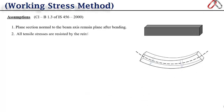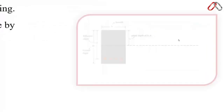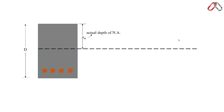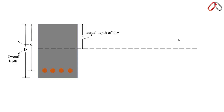The second assumption is that all tensile stresses are resisted by the reinforcement and none by the concrete, except in the uncracked phase where concrete alone resists both compressive and tensile stresses. Here xa is the distance of the neutral axis from the upper fiber, capital D is the overall depth, small d is the effective depth — the distance from the centroid of steel to the extreme upper fiber — and b is the breadth of the beam section.